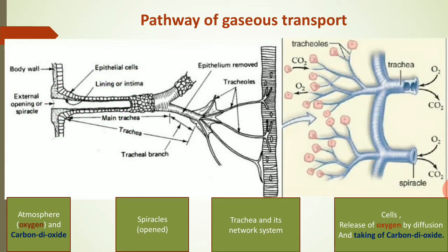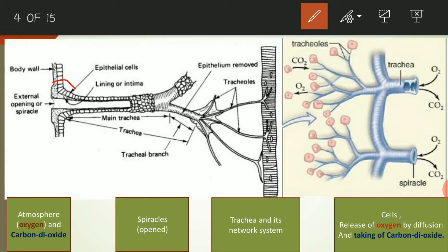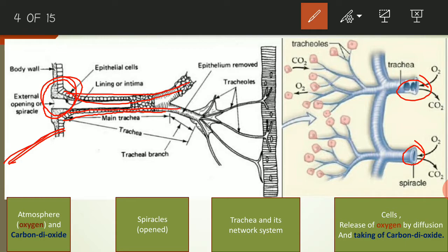Here is the spiracle and this is the body wall. The spiracle continues with the main trachea, and this main trachea again branches and forms many tracheoles, which are very narrow. These tracheoles come in direct contact with the tissues or cells.